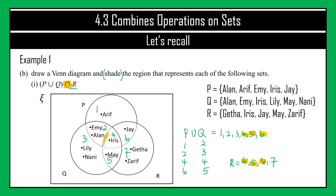Whenever you shade a region, make sure you shade neatly. You can use a pencil or colored pencil, but I do not encourage using a highlighter. Make sure to shade inside the section without going beyond the boundary lines. The final answer for question B number 1 is sections 4, 5, and 6 shaded.